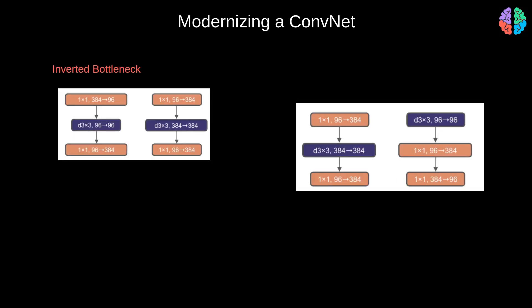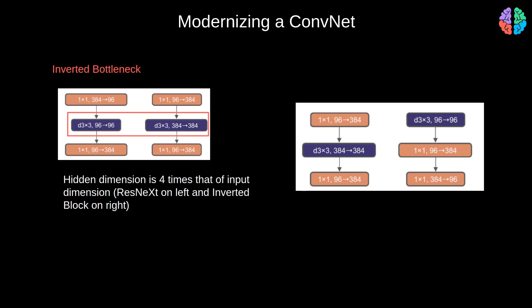In the previous step they increased width to 96. Now, the inverted bottleneck idea says the hidden dimension width in the middle should be at least four times that of the input, so they increased width from 96 to 384. This is again inspired by MobileNets. Additionally, since transformer architectures use large kernel sizes like 7×7, they adopted the same kernel size, requiring the depthwise convolution layer to be repositioned. With these changes, accuracy hits 80.6.